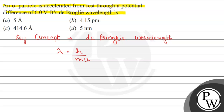According to the question, we have to find lambda. We have h (Planck's constant) and m (mass of the alpha particle), but v — the velocity — is not given to us. So we will consider the kinetic energy, because the alpha particle is accelerated from rest. If it is accelerated, it will have kinetic energy, and that kinetic energy formula is ½mv².